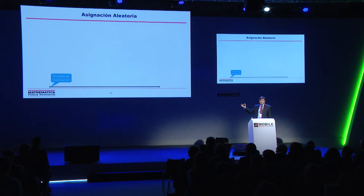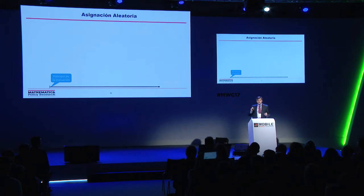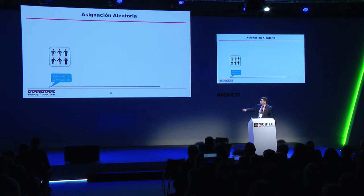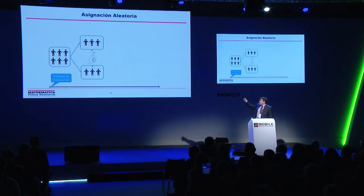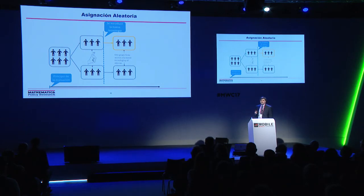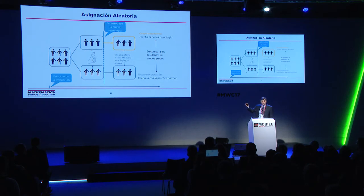The two methods the Coach uses are random allocation and statistical pairing. In random allocation, we take a group of students, parents, and teachers and randomly decide who will use the technology and who will continue with traditional practices. This guarantees that any difference between the two groups can be attributed to the technology. This is the gold standard in research — the same type of evaluation used to approve drugs in the US.